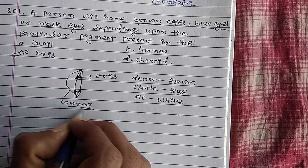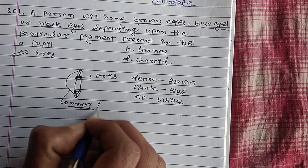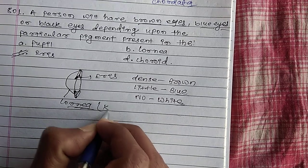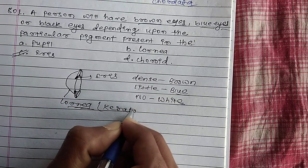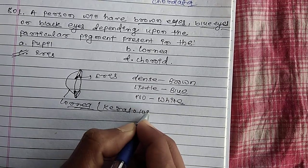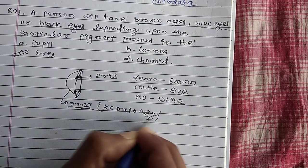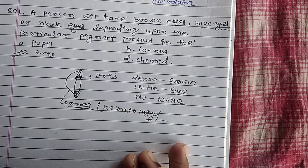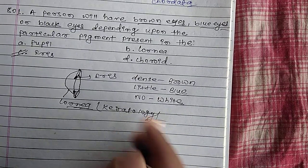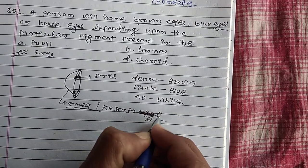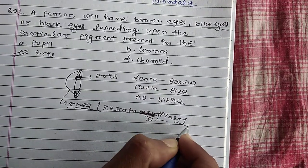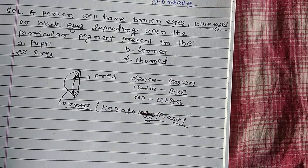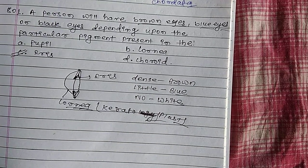This is the cornea. The specialist of the cornea is called a keratologist. The transplant of the cornea is called keratoplasty.